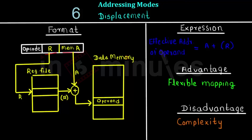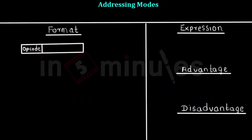The advantage of this system is that it has very flexible mapping — different types of mappings can be implemented using this addressing mode. The disadvantage is that it is complex to implement and understand. However, this addressing mode is used in various processor organizations due to its flexibility and large address space.